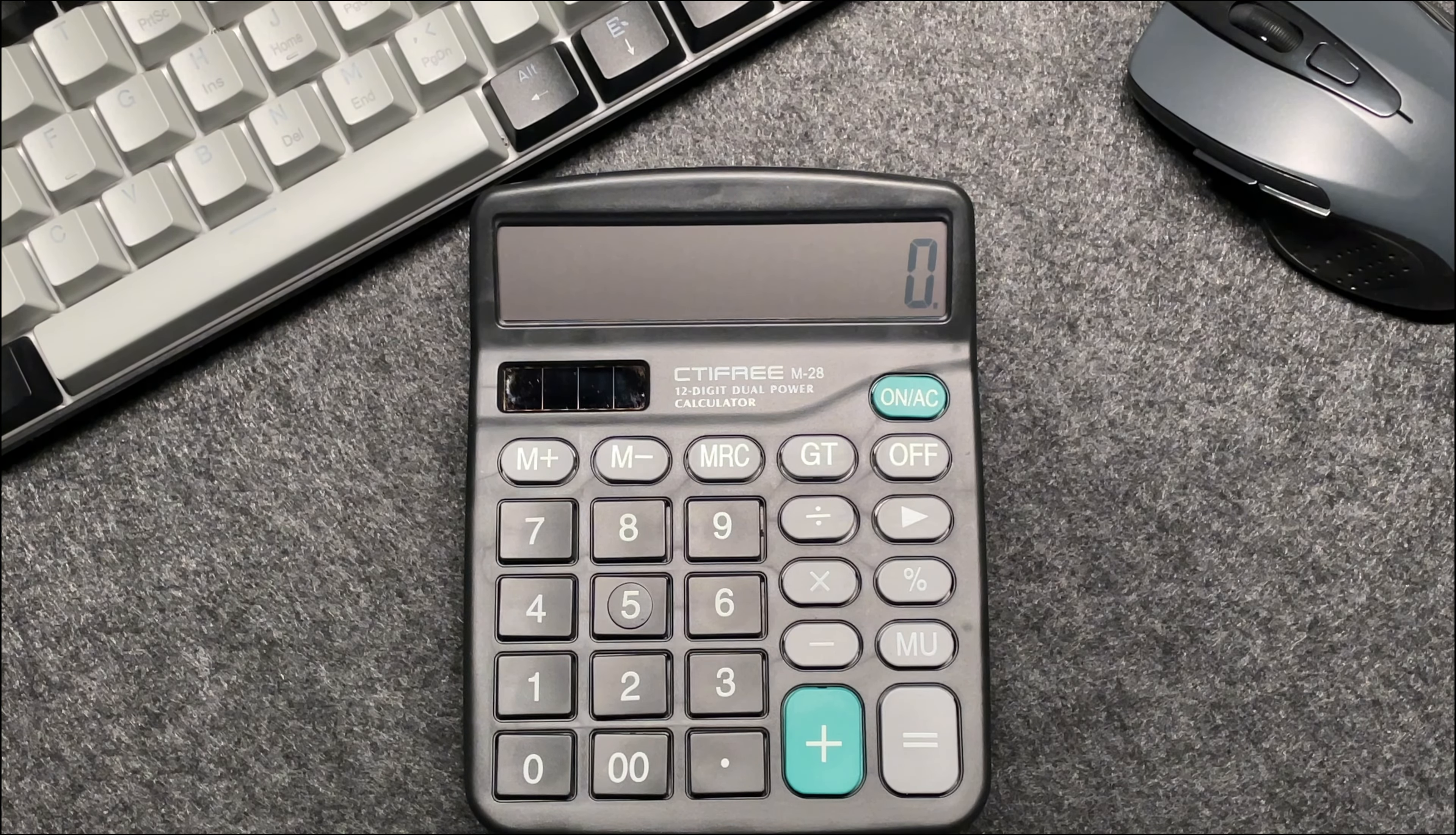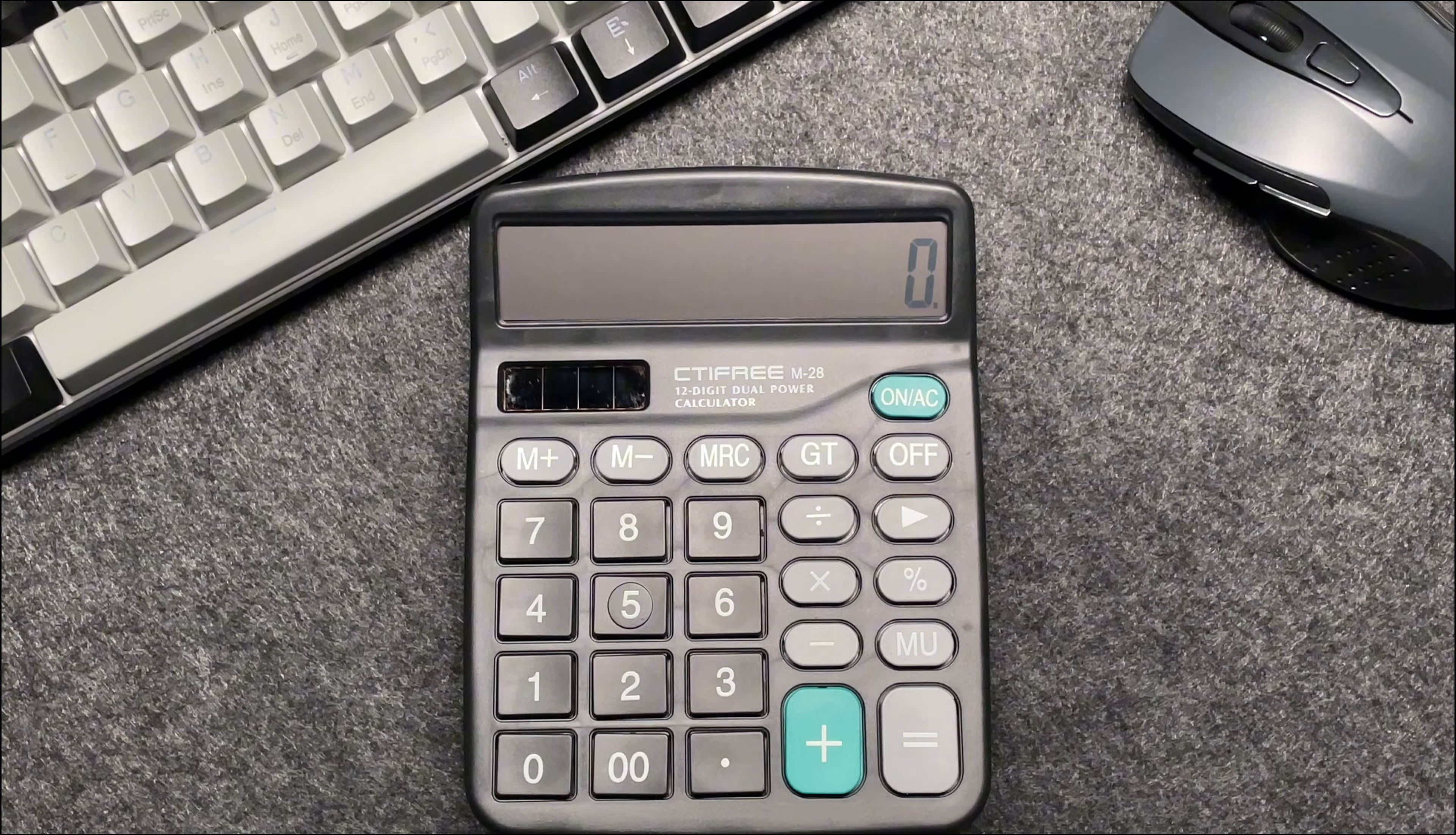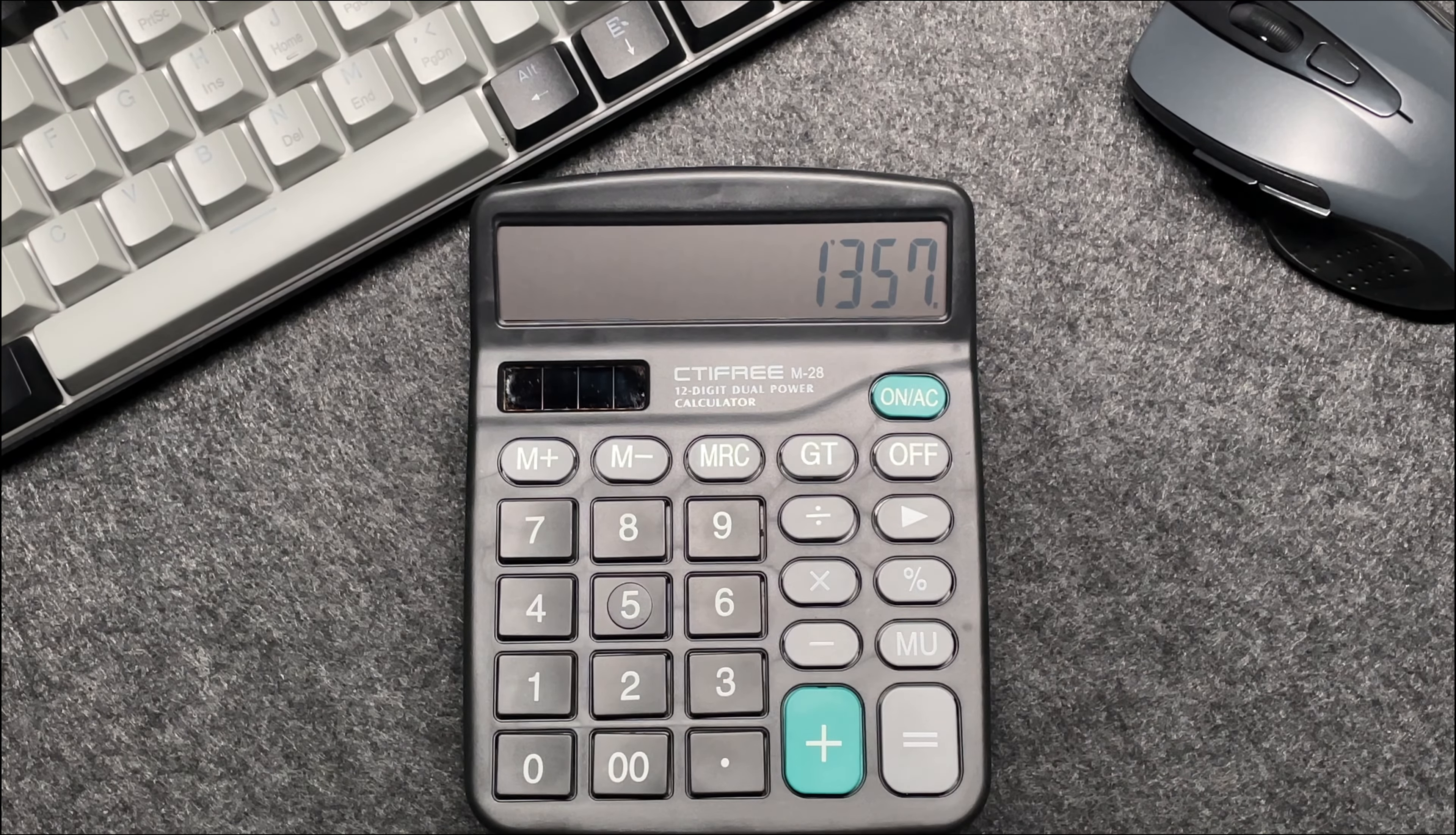you have an item that costs $1,357 and you want to find out what the final price will be after applying a 70% discount. Here's how to do it in just three easy steps. Enter the original price, $1,357, into